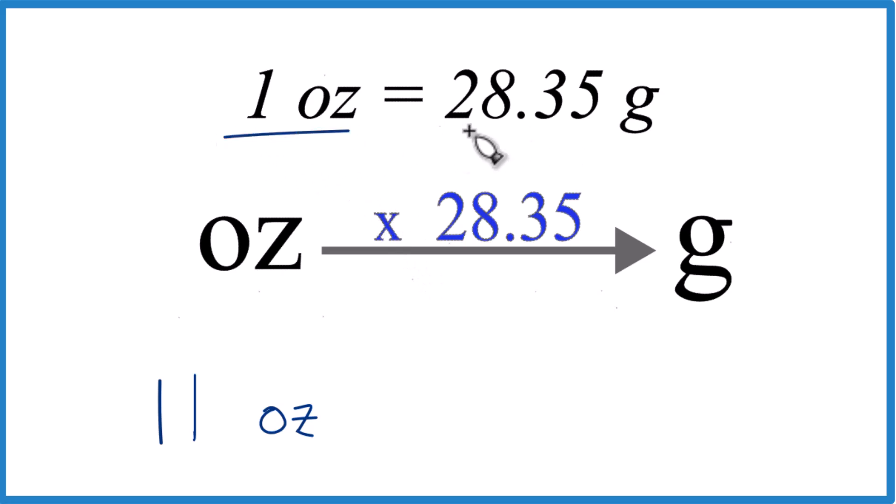Well, one ounce, that's 28.35 grams. We call this conversion factor, so you kind of need to know this to do the conversion.